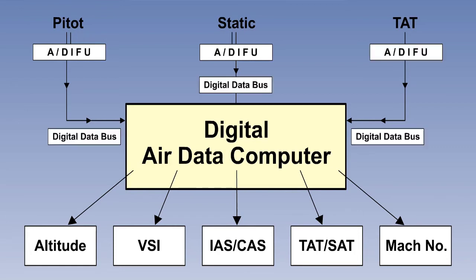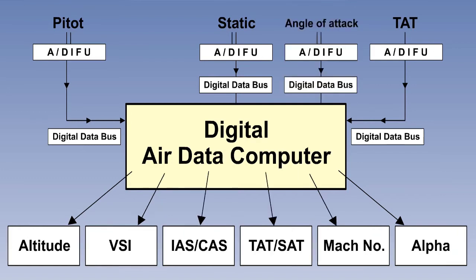With the advent of digital air data computers, a change of format was required, and so these are also often referred to as Analogue to Digital Interface Units, or ADIFUs. The transmission line now becomes a digital data bus bar rather than an analogue electrical signal. With the addition of angle of attack sensing, this brings us up to date with modern systems.